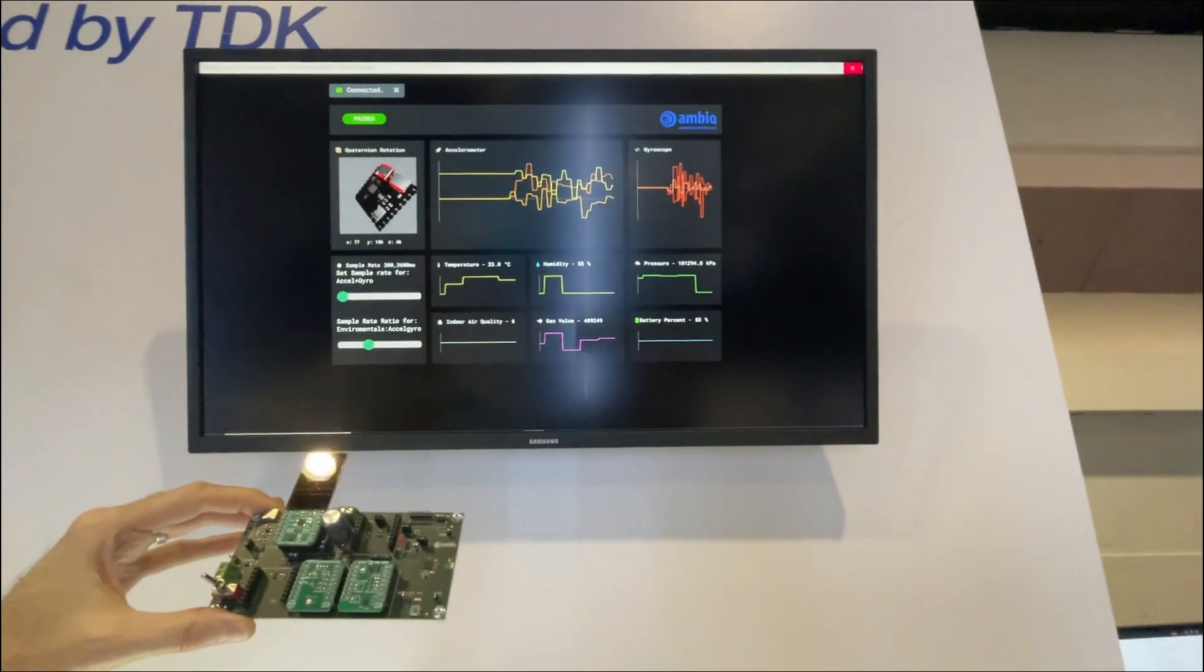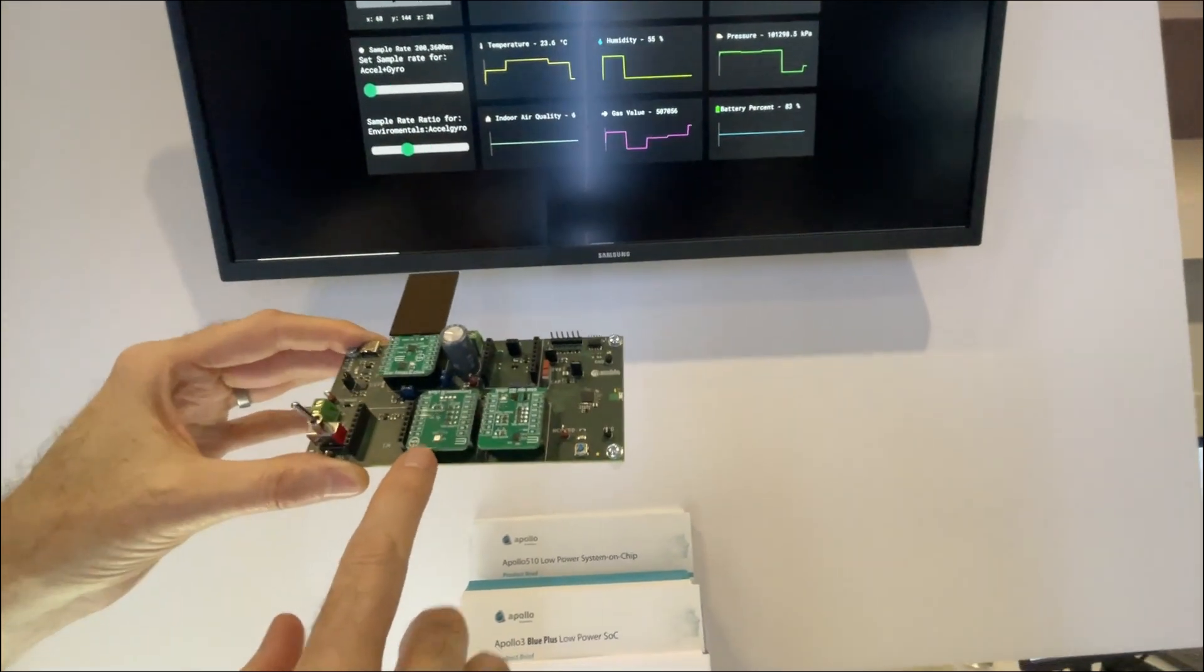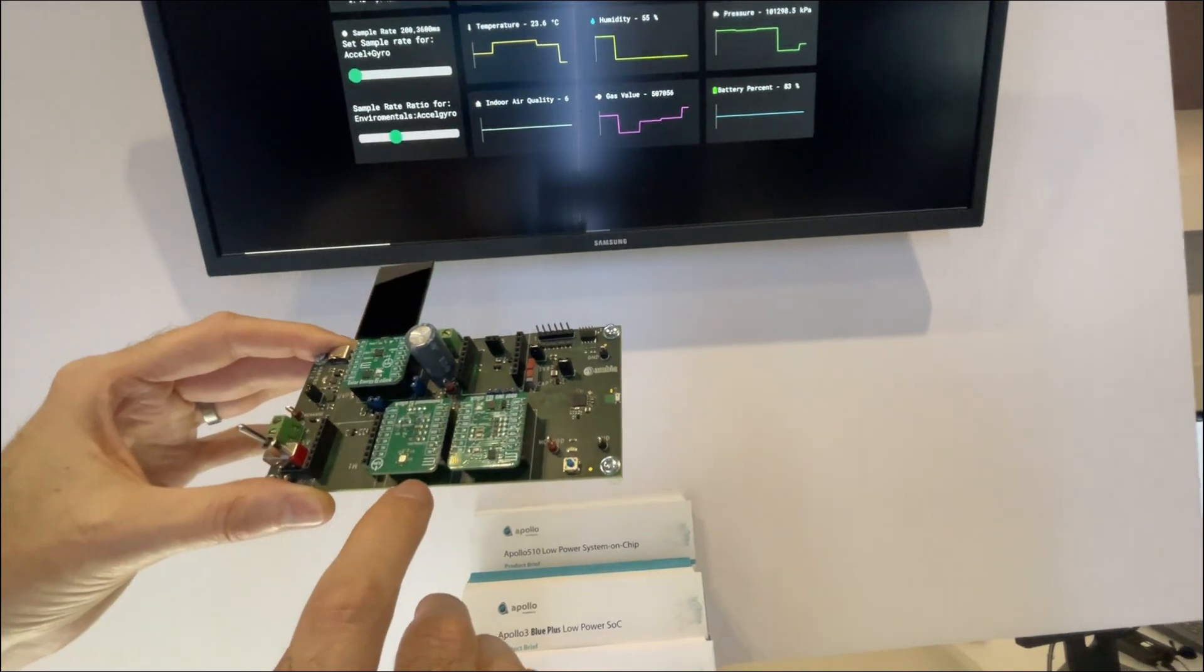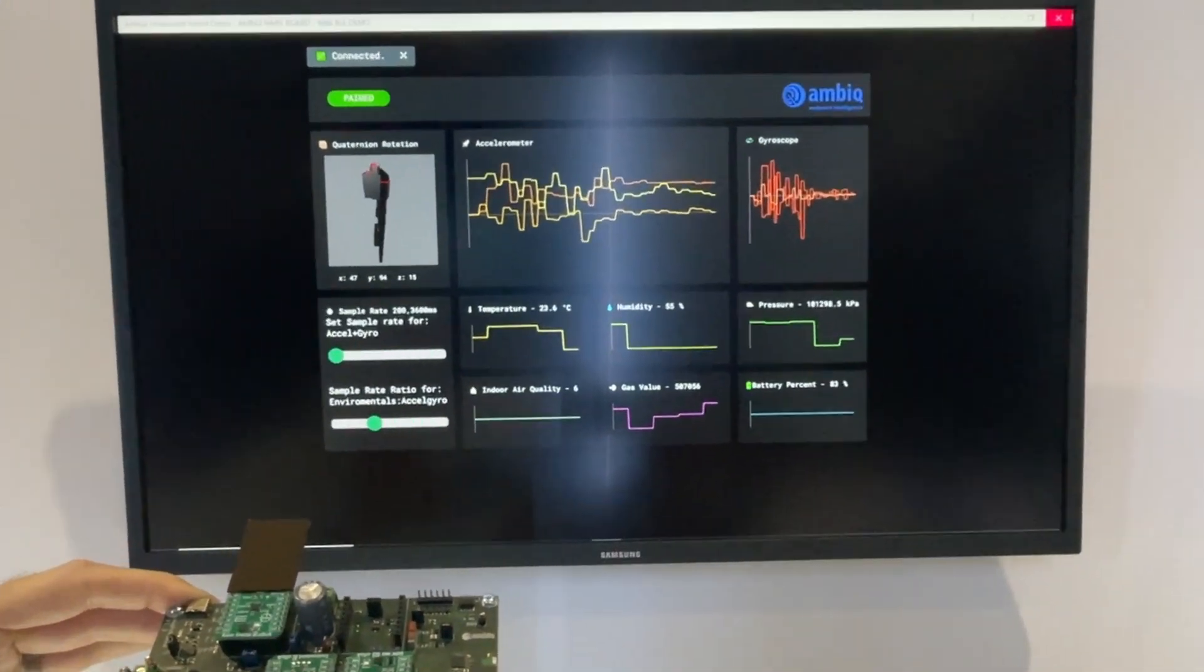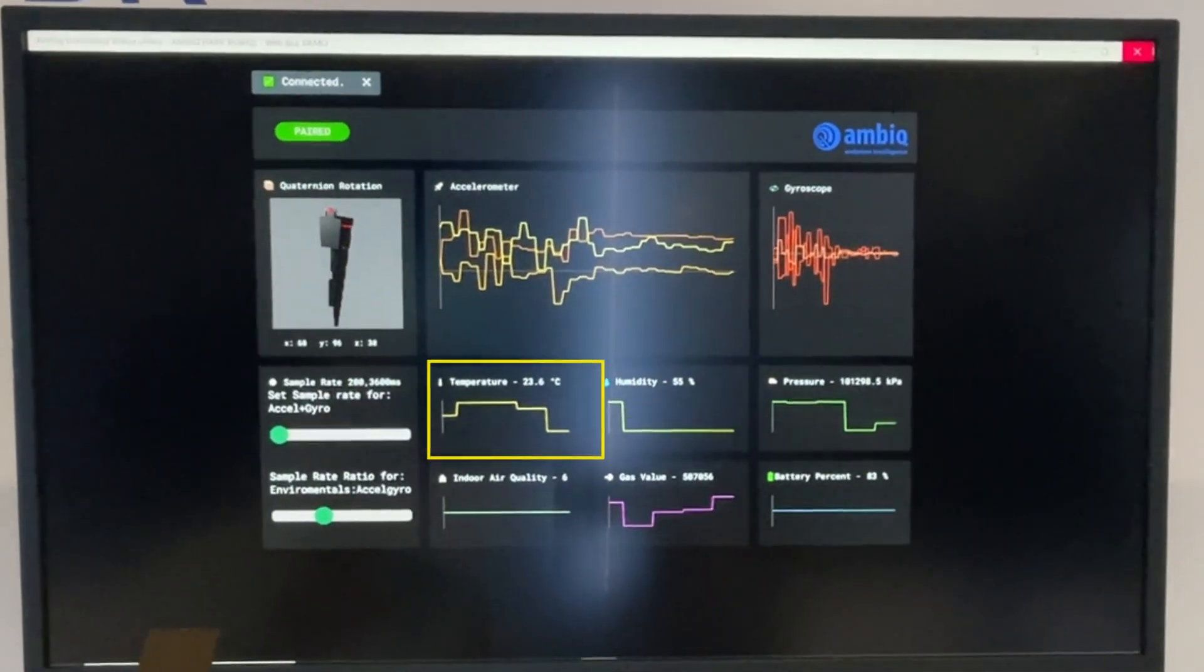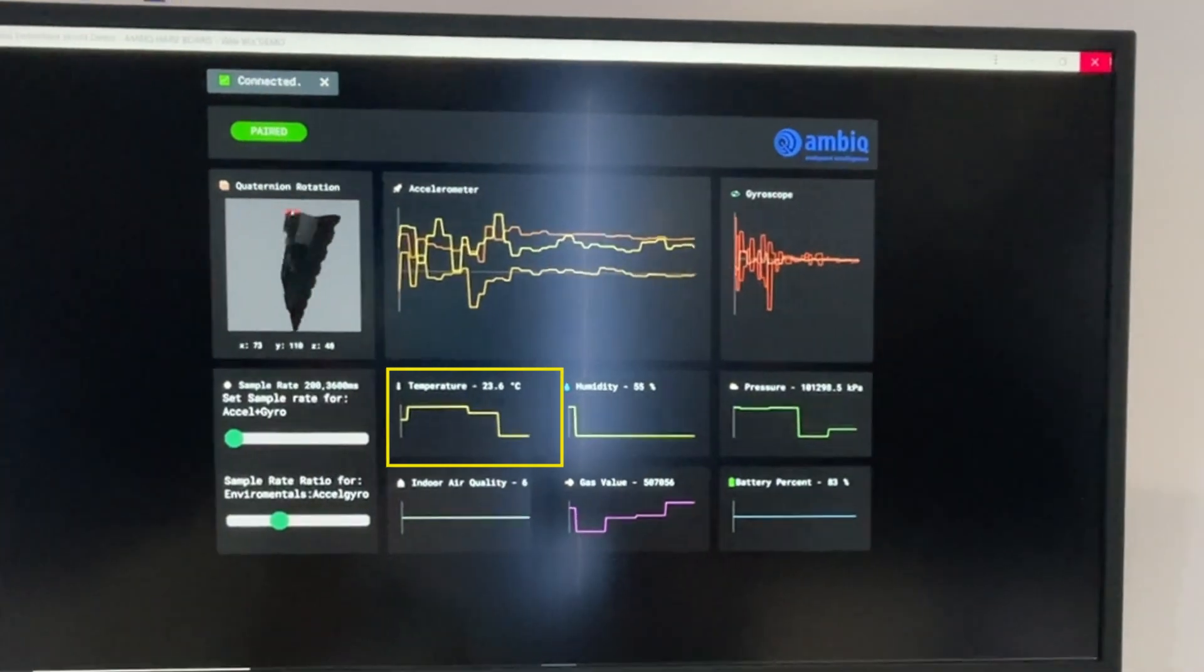Down at the bottom of the GUI we can see the Bosch BME688 sensor, and when I put my finger over that sensor you'll see that the temperature starts to slowly increase. We're sampling the environment at a relatively low frequency.